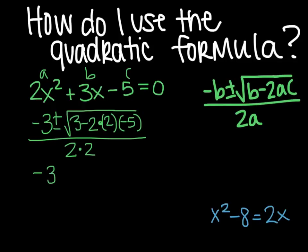So you now have negative 3 plus or minus the square root of 3 minus, and then you have the 2 times 2, which is 4, and then 4 times negative 5. So it's going to end up being positive 20 here.